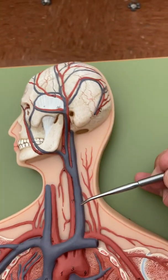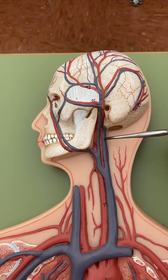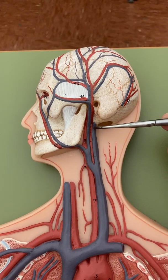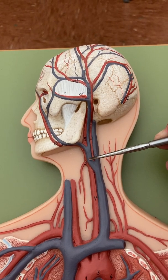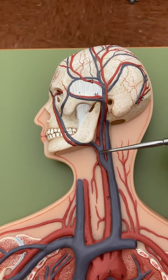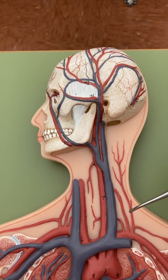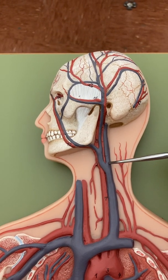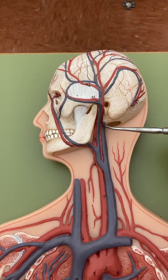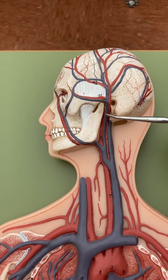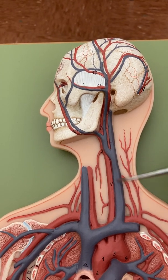Now further up here, the jugular also has an internal going deep into the brain, draining the brain, and an external jugular. Some models will show the internal and external as separately coming off the brachiocephalic. You just have to follow where they're going, where they're coming from. This deeper one is the internal jugular, and the external jugular — this one is just called the jugular.